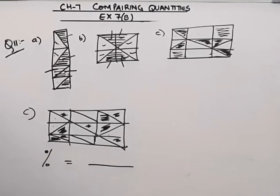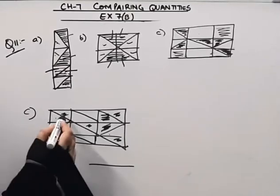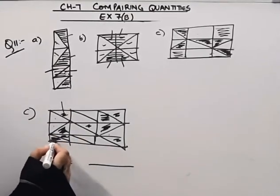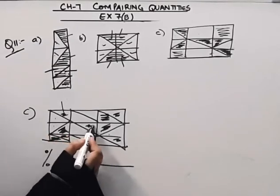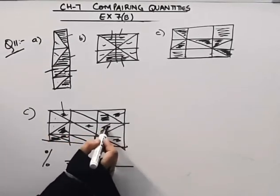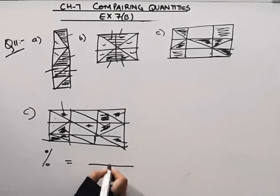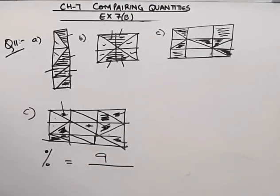Number of shaded blocks. How many blocks are shaded? 1, 2, 3, 4, 5, 6, 7, 8, 9. Nine blocks are shaded.